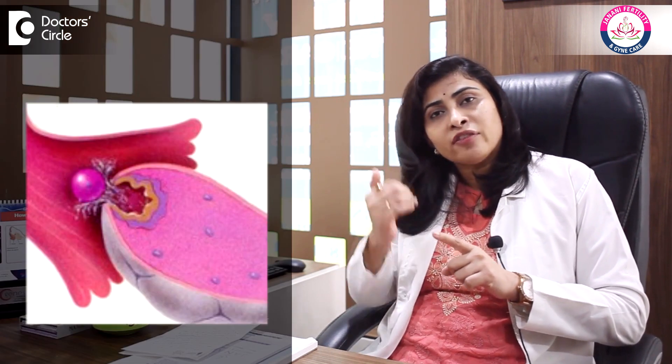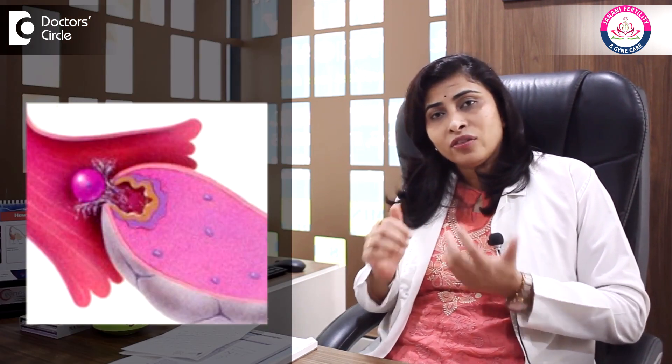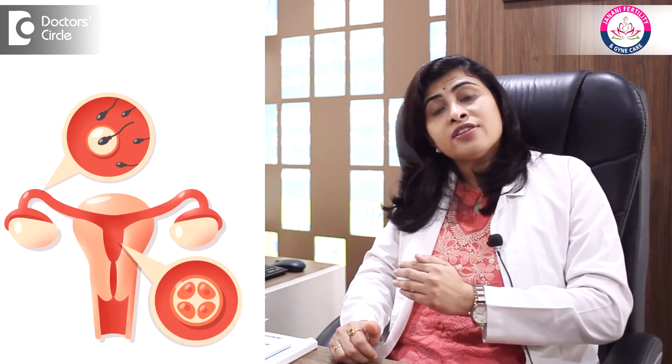When the egg comes out, the fallopian tube, situated very next to the ovary, is supposed to pick up the egg. If the tube picks the egg and you plan an intercourse with the husband at that time, the sperms will travel inside the tube, meet the egg, and fertilization will happen — which results in a pregnancy.